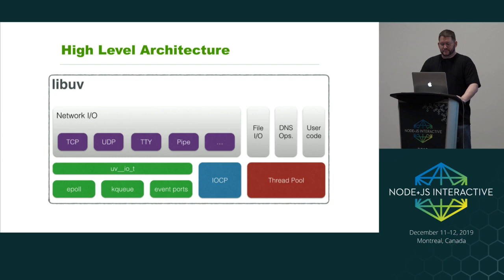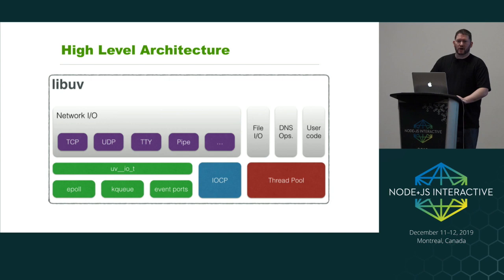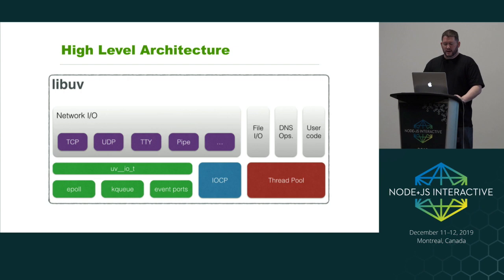One interesting thing on the bottom row: IOCP is basically how we do IO polling on Windows. But we also have things like ePoll, KQ, and event ports. LibUV will basically pick the best primitives for what operating system you're running on — KQ is used on BSDs and Mac, ePoll is used on Linux, and event ports are for Solaris.